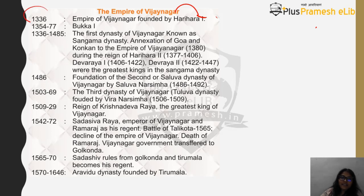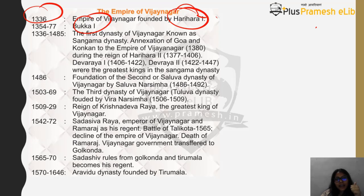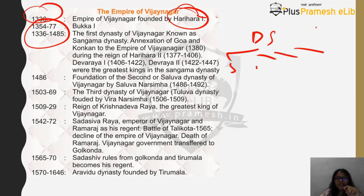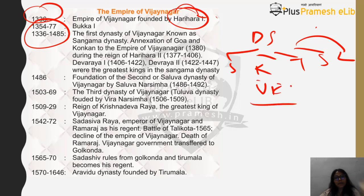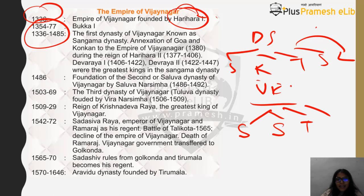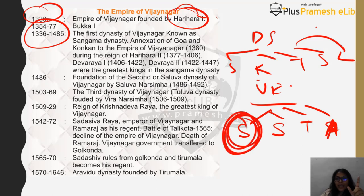The Vijayanagara Empire was founded in 1336 — quite early, when North India had the Delhi Sultanate. The two names associated with its foundation are Harihara and Bukka. From 1336 to 1485, the first dynasty of Vijayanagar, called the Sangama Dynasty, was established. Just like the Delhi Sultanate had five dynasties, the Vijayanagara Empire had four dynasties ruling one after another: Sangama, Saluva, Tuluva, and Aravidu. Harihara and Bukka belong to the Sangama Dynasty, while Krishnadevaraya belongs to the Tuluva Dynasty.